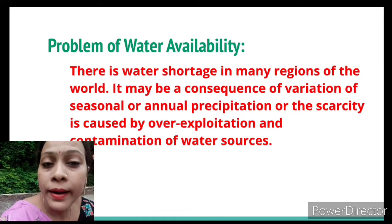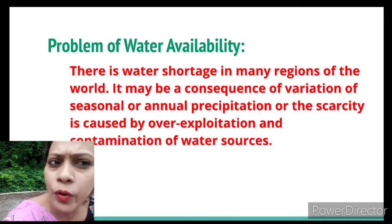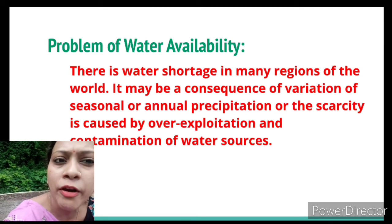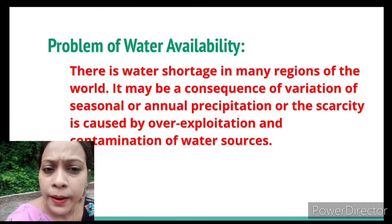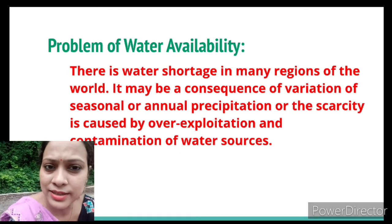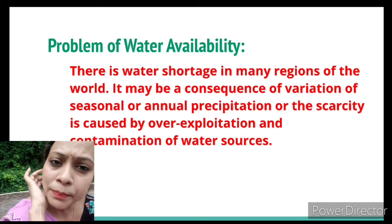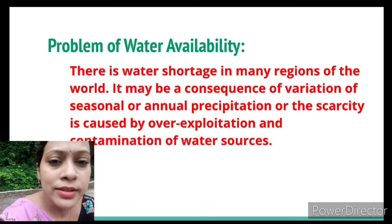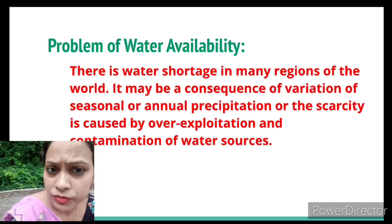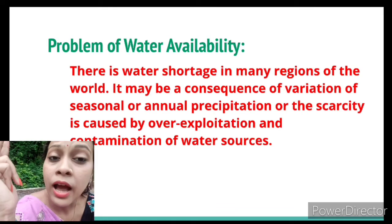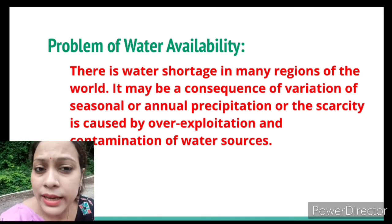There is a problem of water availability, with water shortage in many regions of the world. This may be a consequence of variation in seasonal or annual precipitation, or scarcity caused by over-exploitation and contamination of water. In India alone, we can see water scarcity in Ladakh, parts of Rajasthan, and other areas. Variation in seasonal and annual precipitation is one reason; over-exploitation and pollution degrading water quality is another.